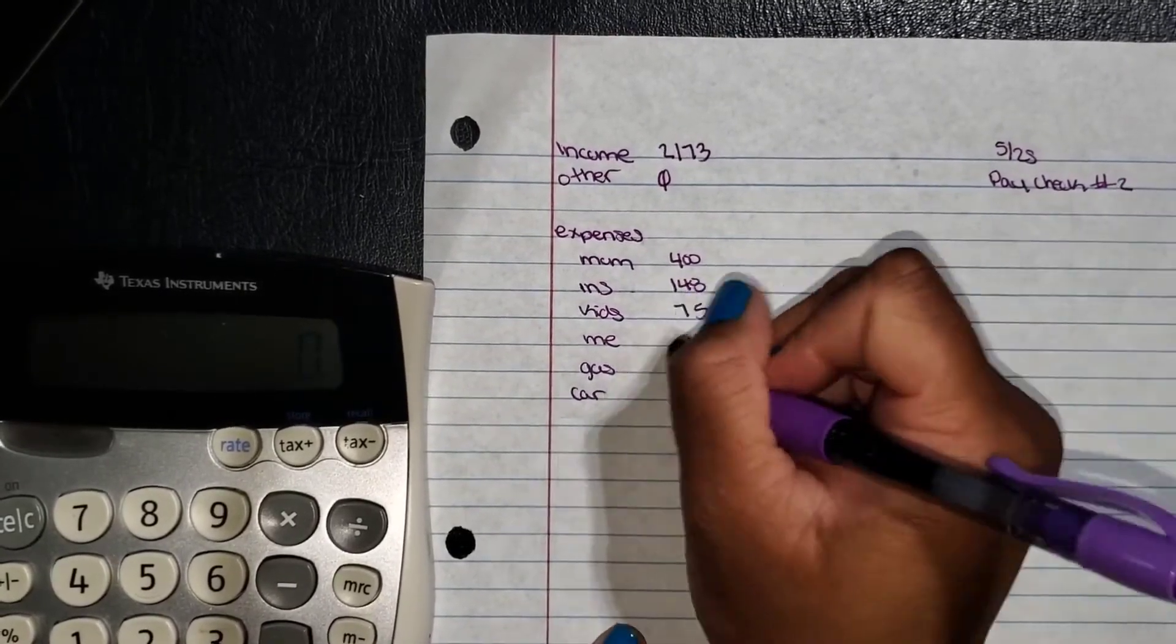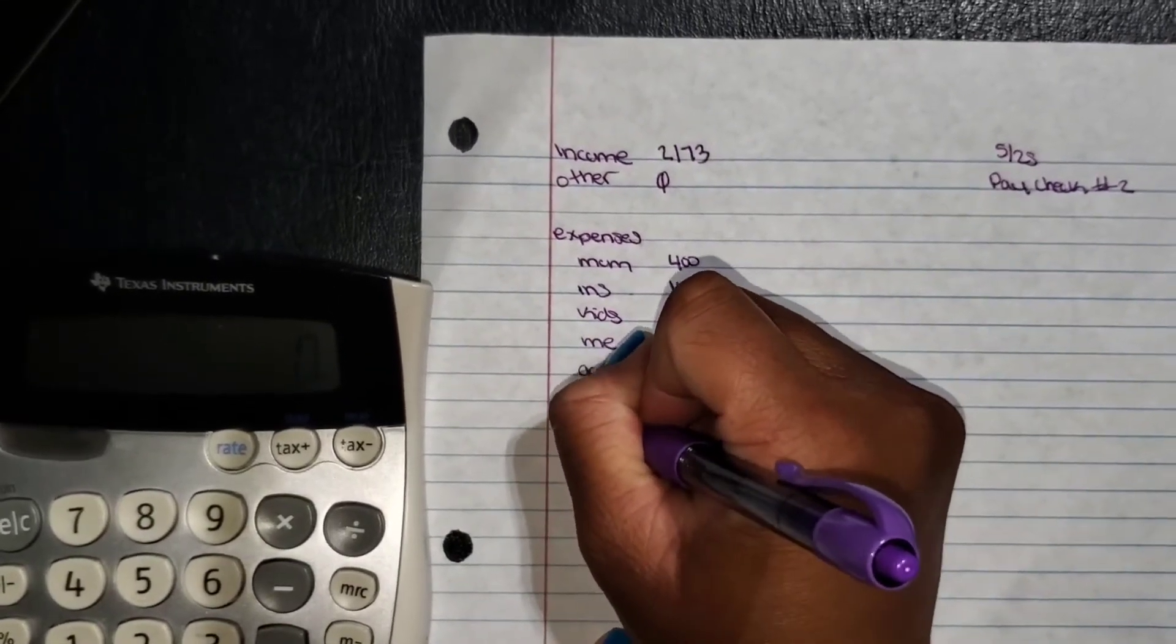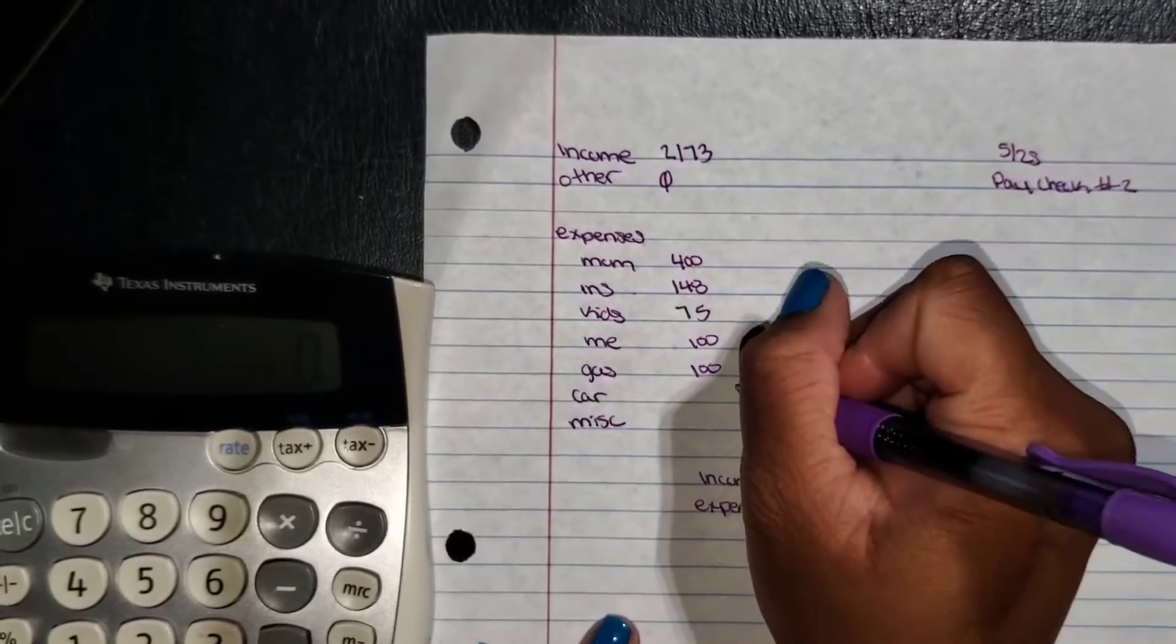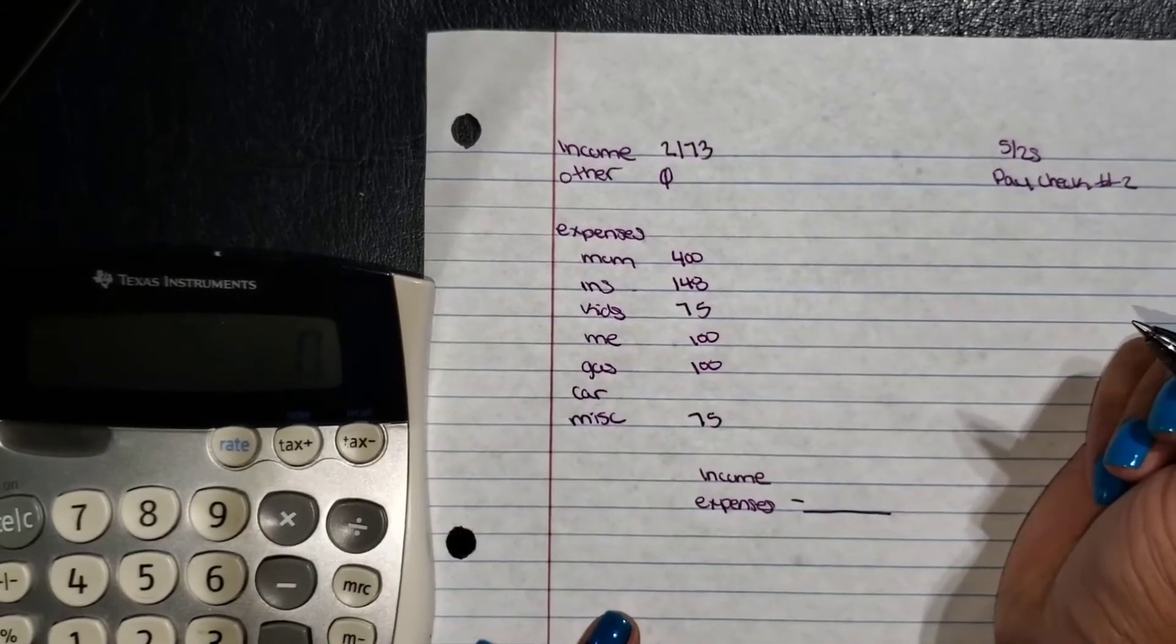Now let's do that last. I just noticed I'm missing my miscellaneous fund. Miscellaneous includes anything from Netflix, Hulu, any subscriptions. I just included all in the miscellaneous and that is going to be $75.